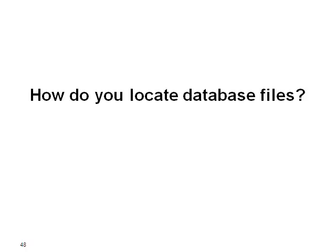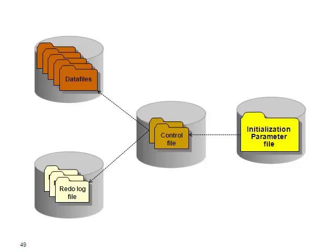Now how do you locate the database files? It's very similar — still using this initialization parameter file. However, there might be many data files and you can add them on the fly. So that's why there is one important category of files you need to remember: the control file, which lists all the other database files like data files, redo log files, and temp files. So from your initialization parameter file all you need to specify is the location of these control files, so that in turn we can determine the list of the other files. That's why control files are very important and they are always mirrored.